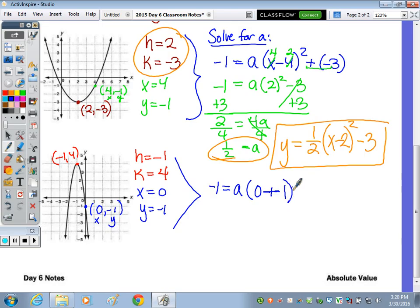And now we're going to solve for a. So y would be negative 1 equals, a is going to stay alone. x minus h, x is 0, minus h, which is negative 1. When you subtract a negative, it turns to positive squared, plus k.